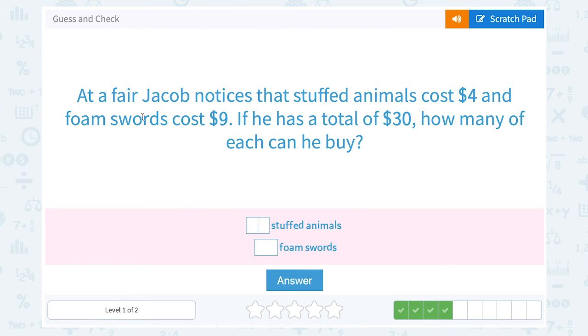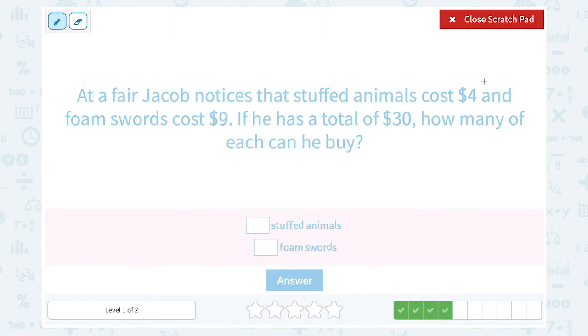At a fair, Jacob notices that stuffed animals cost $4 and foam swords cost $9. If he has a total of $30, how many of each can he buy? So we want to see, let's use A for stuffed animals and F for foam swords.